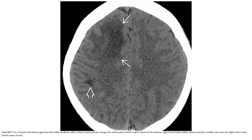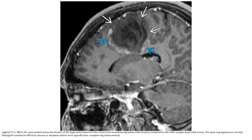Case: Non-contrast CT in a 16-year-old with progressive left-sided weakness after minor trauma, showing a large low-attenuation white matter lesion in the anterior right frontal lobe and a small one near the right motor strip. T1 contrast-enhanced MRI in the same patient: the bottom of the lesion nearest to the cortex appears not enhanced compared to the other margins — this open ring sign can help distinguish demyelinating disease from tumor.